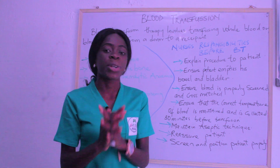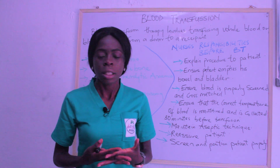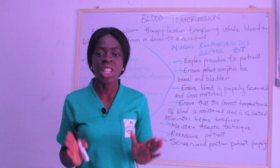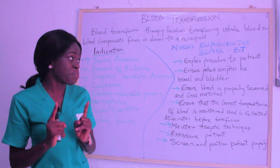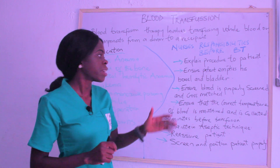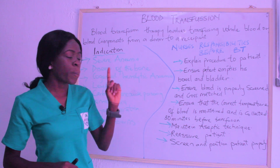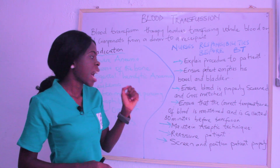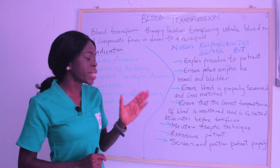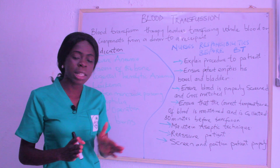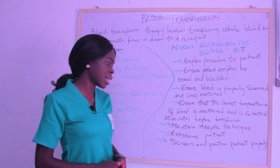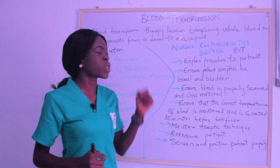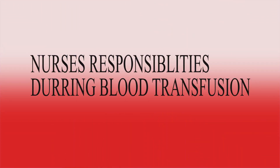Also screen and position the patient properly — ensure the patient's privacy is maintained. To summarize, the nurse's responsibilities before blood transfusion are: explain the procedure, ensure the patient empties bowel and bladder, ensure blood is properly screened and cross-matched, maintain correct temperature, maintain aseptic technique, reassure the patient, and screen and position the patient properly.